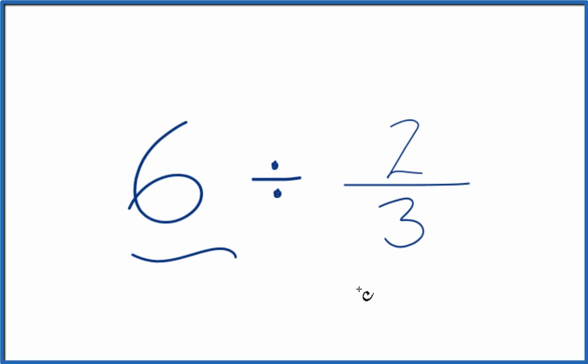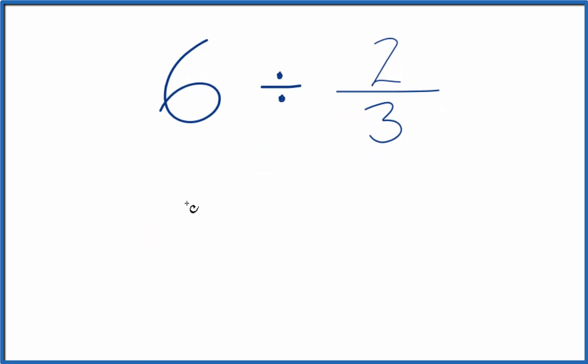If you need to divide 6 by 2 thirds, here's how you do it. So let's call this 6 over 1. It's still 6. We're just dividing by 1, but now we have a fraction.